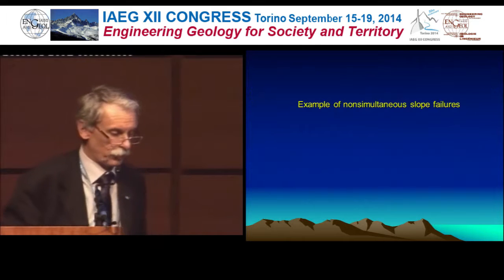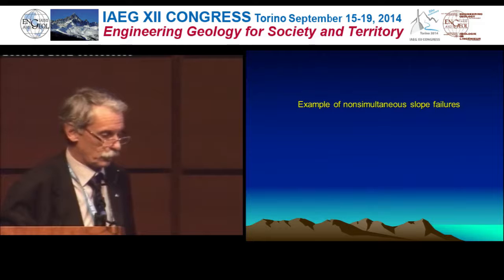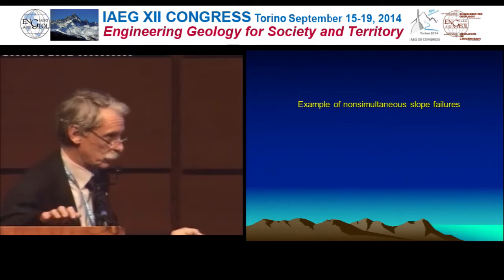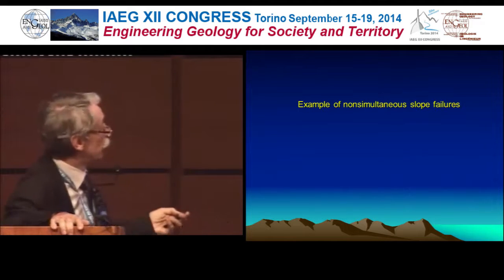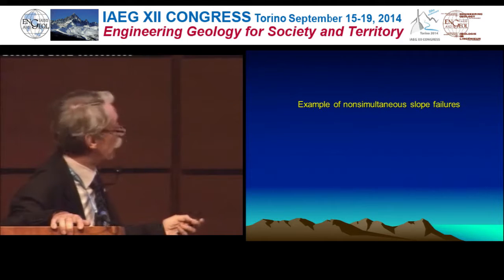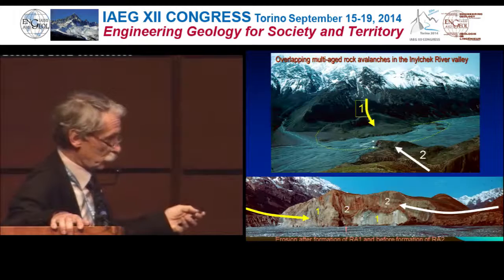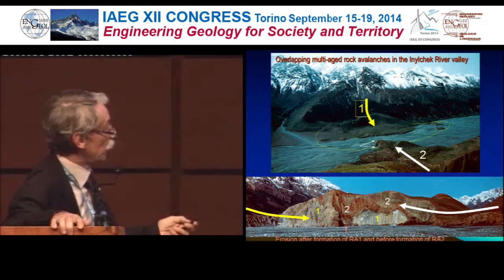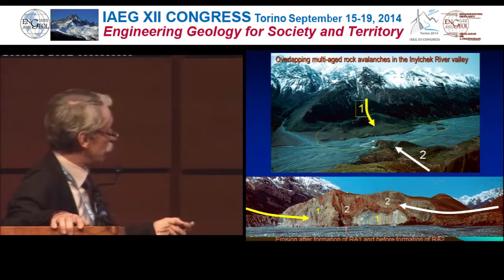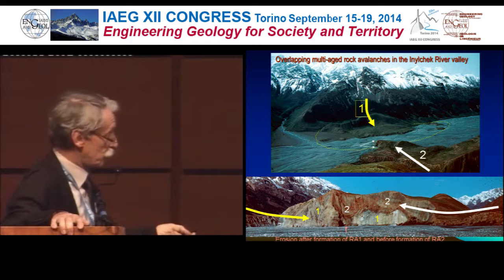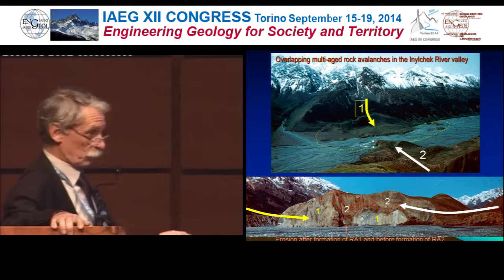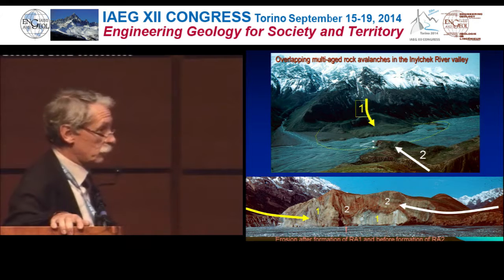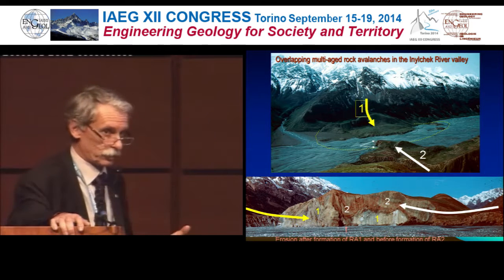Here is an example of non-simultaneous slope failures — the Inelchek River Valley in eastern Tianshan. We have two rock avalanches: one from here that formed a body which was later significantly eroded by the river, and another from this side. Looking at this outcrop, it is the first one; then some erosion occurred and we have evidence of this erosion, and this one is the second. We can say they occurred one after another with some interval — in different times.